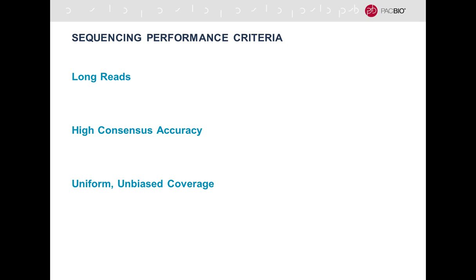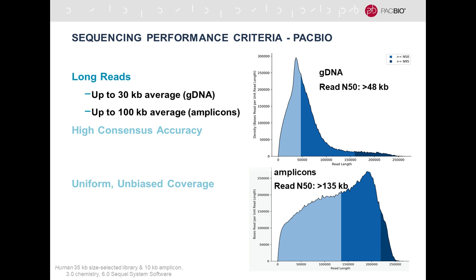With regard to sequencing performance, there are three main categories to evaluate any sequencing technology. We've tried to give the best possible performance in all three criteria simultaneously. Just yesterday we released the latest sequencing chemistry, and I'm happy to report we've further increased throughput and yield. Regarding read length, PacBio provides very long reads — now up to 30 kilobases on average for genomic DNA and up to 100 kilobases on average for amplicons. On the right are two representative examples: the top shows human genomic DNA with an average well over 30 kilobases.